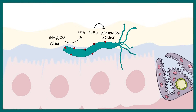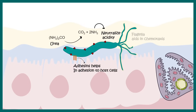Helicobacter pylori also expresses some adhesion molecules known as adhesins, which help the bacteria attach to the epithelial cells and infect them. Additionally, Helicobacter pylori has tufted flagella which help in chemotaxis and penetrating this thick layer of mucus.